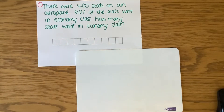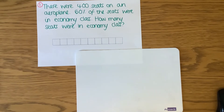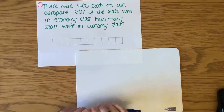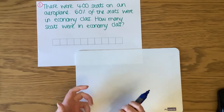So today we're going to be learning to find percentages of an amount, remembering that a percentage means out of a hundred. So if we have a look at this first question together, we can look at how we find a percentage of an amount. Question one: there were 400 seats on an aeroplane, and 60% of the seats were in economy class. How many seats were in economy class?